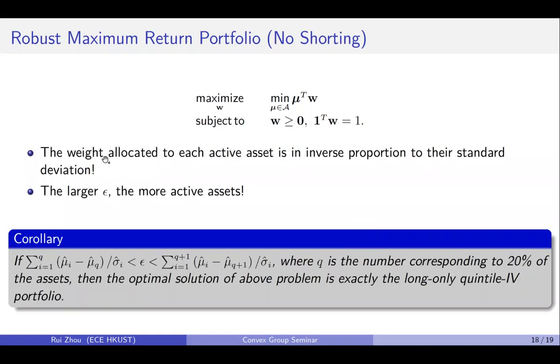From this lemma, we get that the weight allocated to each active asset now becomes inverse proportion to their standard deviation, and still, the larger uncertainty level, the more active assets. So now we know that the long-only quintile inverse volatility portfolio is a special case of its optimal solution when the uncertainty level is within this range.